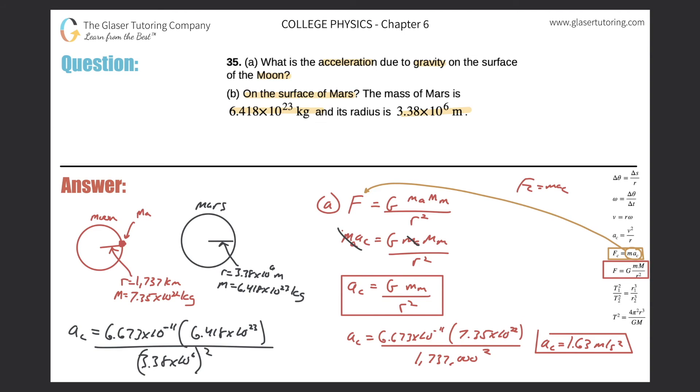Let's just see what this baby comes out to be. So centripetal acceleration here will be equal to, so 6.673 times 10 to the minus 11 times 6.418 times 10 to the 23. Divide that by now 3.38 times 10 to the 6th, and square it. So 3 point, that makes sense, about 3.75. So 3.75 meters per second squared.